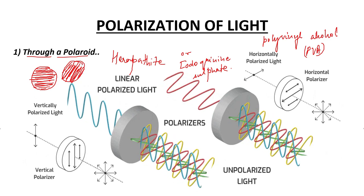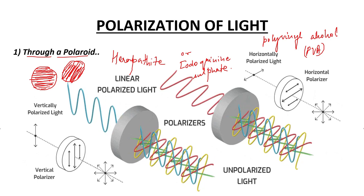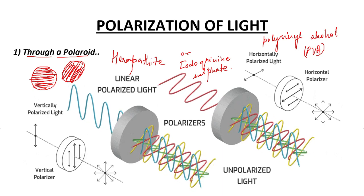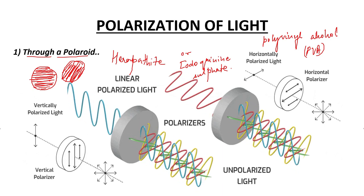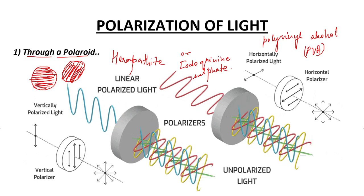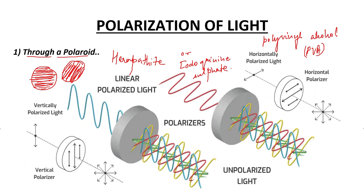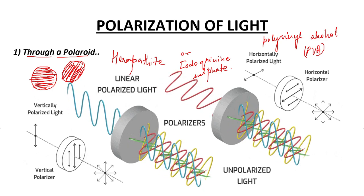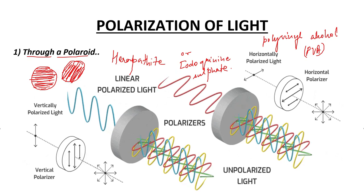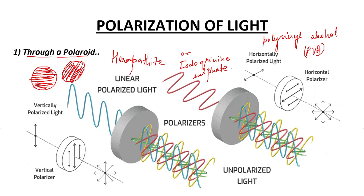When the light ray passes through the Polaroid, the ray vibrating parallel to the crystal alignment makes the electrons vibrate and move along that direction, and in turn absorb the light ray. But if the light ray passes perpendicularly to the alignment of the crystals or the polymer chain, the electrons cannot move along that direction, so the light ray is not absorbed and is allowed to pass through.